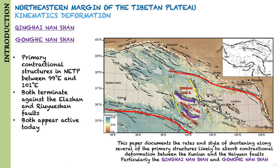These two fault systems represent the primary contractional structures within northeastern Tibet between 99 degrees east and 101 degrees east. Both fault networks terminate to the west and east against the Elashan and Riyuexan faults, and both appear to be active today.